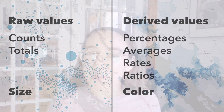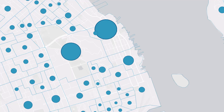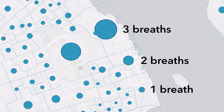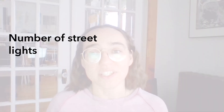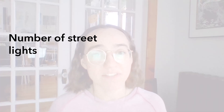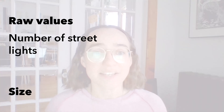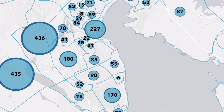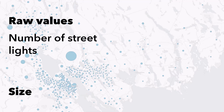Why? This rule seems pretty arbitrary, so let's look at a few analogies to understand where it's coming from. Let's imagine that each of these circular symbols is a balloon. The more breaths of air I add to each balloon, the bigger it gets. Size is an intuitive way to represent quantities, because as you add more things to a pile, the bigger the pile gets. The number of streetlights in each dissemination area is a raw value, so I will use size. And when I try it, I get a pretty intuitive map — any casual viewer will assume that the larger circles mean more streetlights.